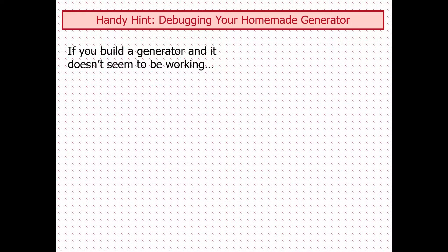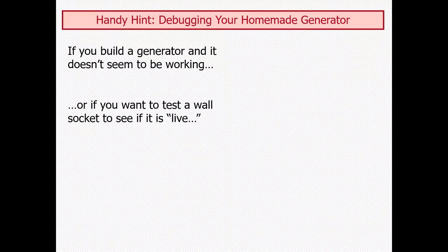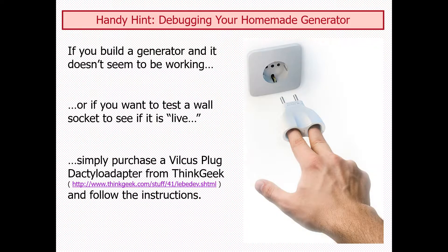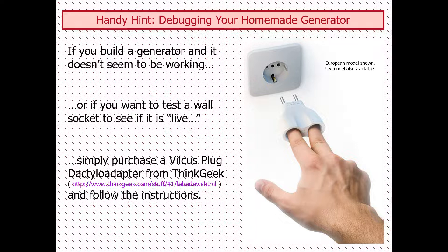A handy hint: if you build a generator and it doesn't seem to be working, or if you want to test a wall socket to see if it is live, simply purchase a voltmeter plug or ductile adapter and follow the instructions. You won't try this by yourself — it might be quite dangerous. That's all we have for this lecture. Thanks for watching; I'll see you in the next lecture very soon. Bye-bye.